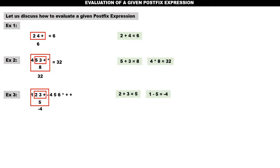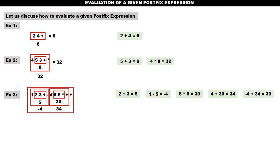Next is star. For star, the two operands are five and six. Therefore, five into six is 30. After that, plus. For plus, the two operands are four and 30. Four plus 30 is 34. Last operator plus — the two operands are minus four and 34. Minus four plus 34 is 30. So 30 is the answer.